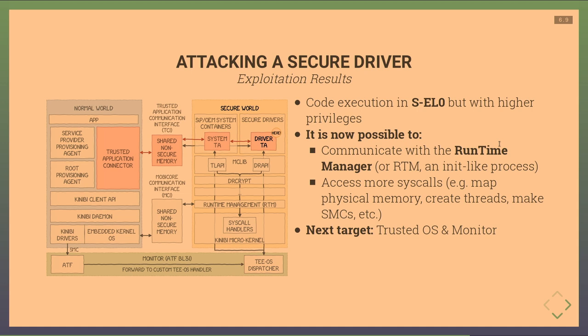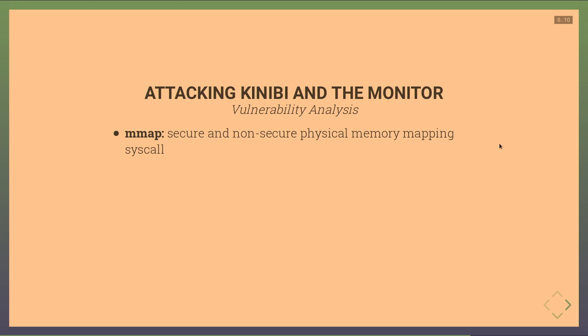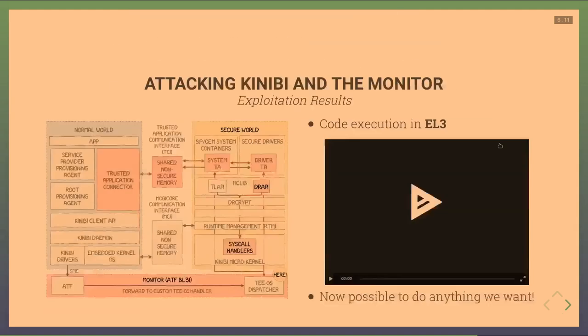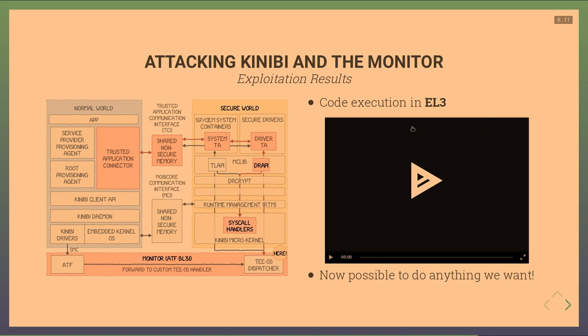The third vulnerability targets the trusted OS and monitor via the mmap syscall. The mmap syscall can map physical memory in both secure and non-secure states, and the vulnerability is that there is no restriction on what you can map. The monitor is mapped at address 0x22000; we map it into our secure driver, modify it to hijack the SMC handler, then execute the SMC from the secure driver. This has been patched in newer versions of Kinibi using a blacklist, but on affected devices it yields code execution in EL3.